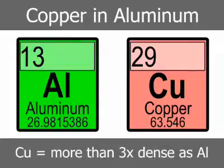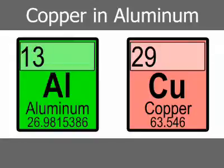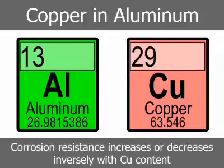Copper is more than three times as dense as aluminum. The principal disadvantage of copper in aluminum-silicon-copper alloys, as noted above, is the marked effect on corrosion resistance. Corrosion resistance increases or decreases inversely with copper content, especially at very low levels.